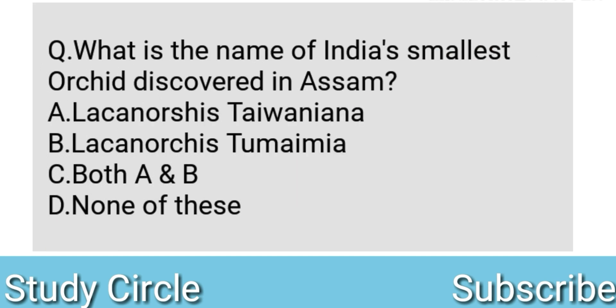What is the name of India's smallest orchid discovered in Assam? Option A: Lacaorchis taiwaniana. Option B: Lacaorchis tumamiya. Option C: Both A and B. Answer: A — Lacaorchis taiwaniana. Assam's discord kora pharator atat koi horu orchid jophae hoise — Lacaorchis taiwaniana.